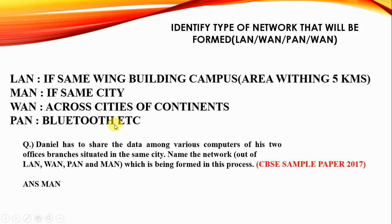Here is an example from the CBSE Sample Paper 2017: 'Daniel has to share data among various computers in office branches situated in the same city.' Since it says 'within the same city,' we identify the network type from LAN, WAN, PAN, and MAN. As I mentioned, same city means the answer is MAN.